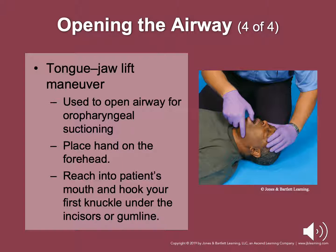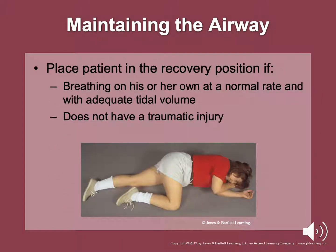Place the patient in recovery position if they are breathing on their own at a normal rate with adequate tidal volume and do not have a traumatic injury. Just roll the patient onto their side so that the head, shoulders, and torso move at the same time without twisting. Place the patient's lower arm and upper hand under the cheek. After the patient has resumed spontaneous breathing, the recovery position will prevent aspiration of vomit. This allows the patient to vomit out the corner of their mouth rather than having vomit go back down into the airway.